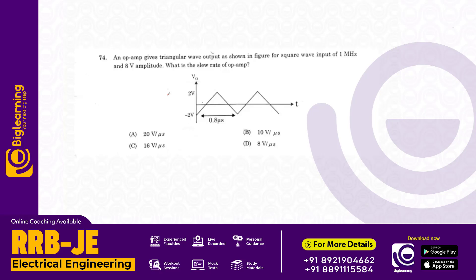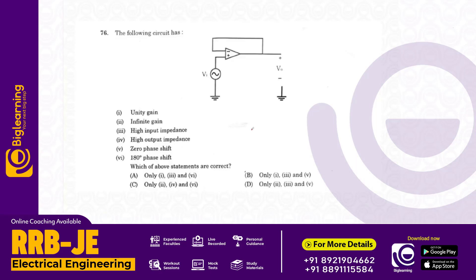An op-amp gives triangular wave output for a square wave input of 1 megahertz and 8 volt amplitude. The slew rate of the op-amp is 10 volt per microsecond. The circuit has unity gain, high input impedance, and zero phase shift. Answer B.